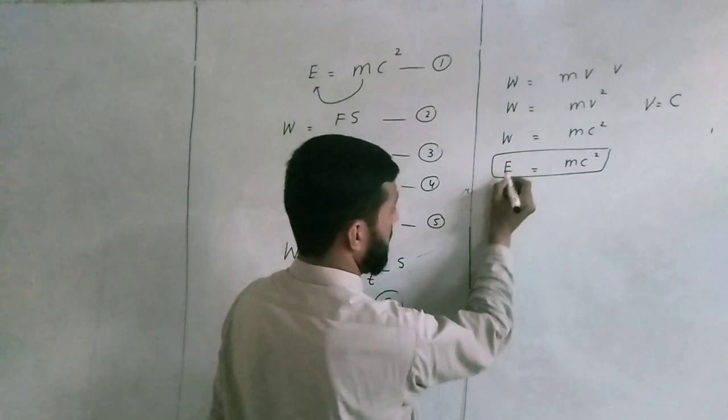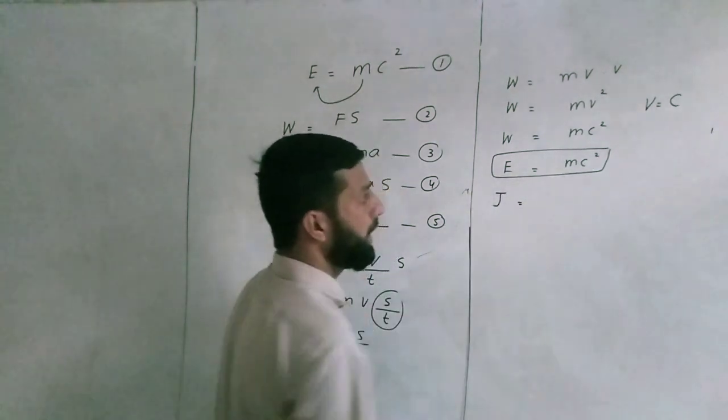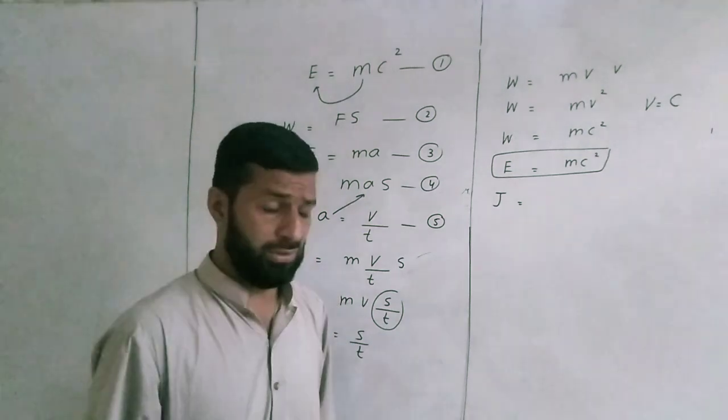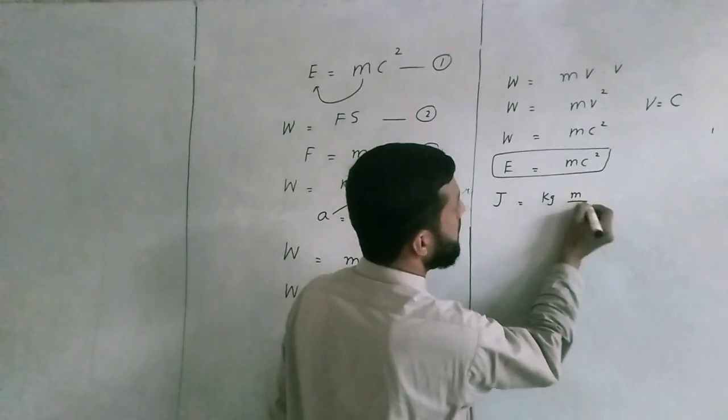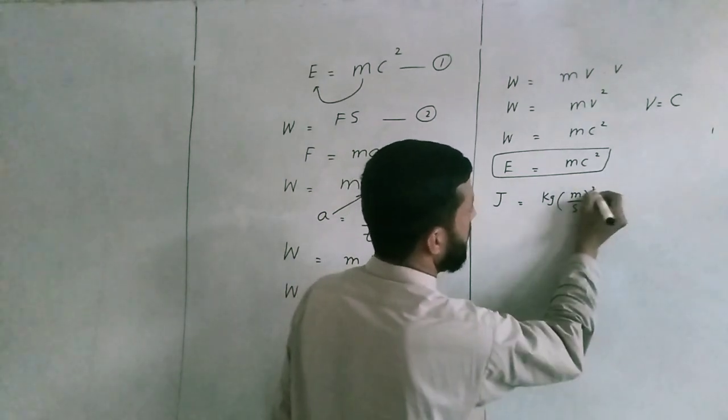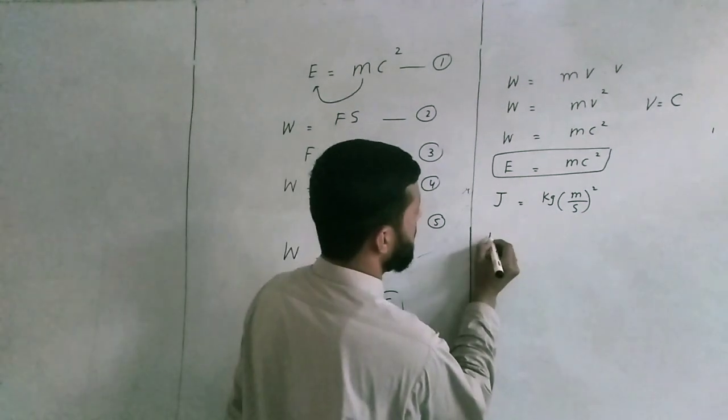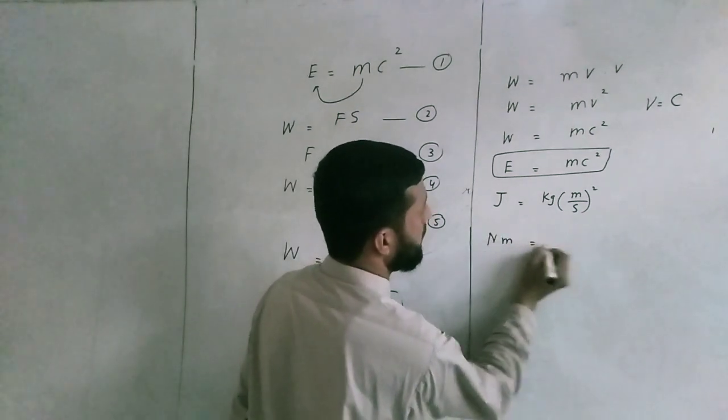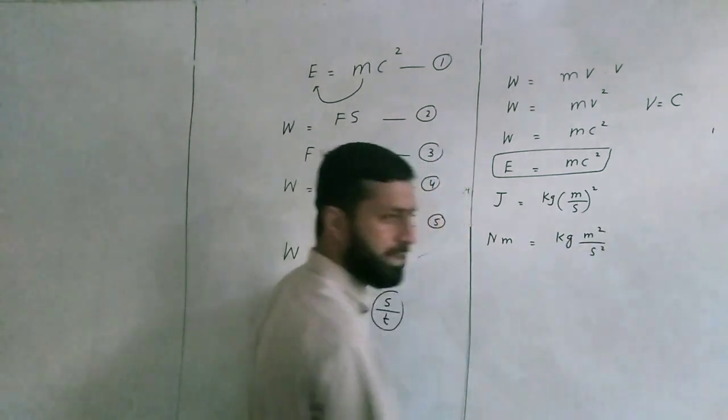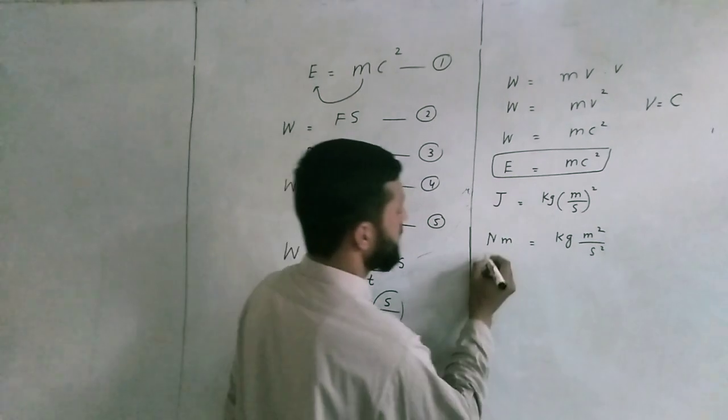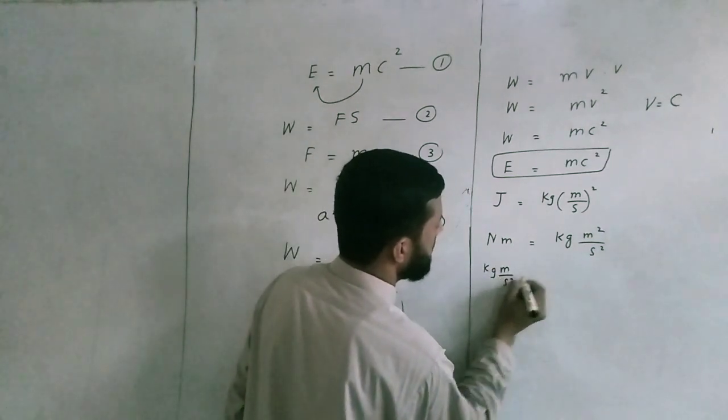So here, if we inspect the energy equation, the unit of energy is joule, and the unit of mass is kilogram, and the unit of speed is meter per second, so it becomes meter per second squared. Joule is basically equal to Newton meter, and this becomes kilogram meter per second squared. Newton is equal to kilogram meter per second squared.